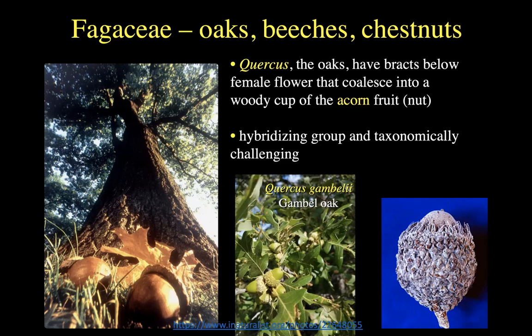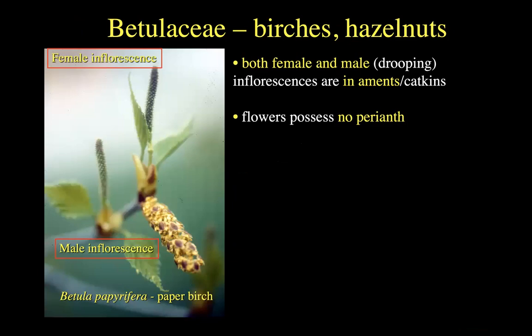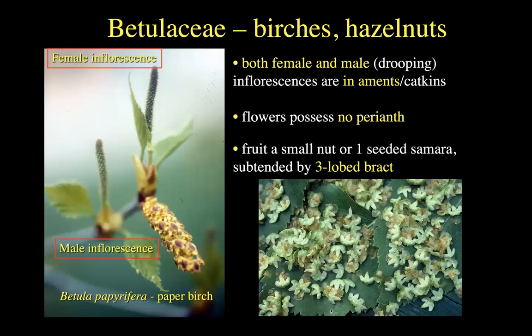Finally, we have the Betulaceae, the birch and hazelnut family. Similarly, we're going to have separate male and female flowers, though on the same individual — so monoecious, as in the paper birch seen here. When you have clusters of single-sexed flowers that are highly reduced, that's called an ament or a catkin. No showy perianth whatsoever in this group. The fruit is going to be called a samara — an indehiscent fruit with a papery wing to mediate wind dispersal — and they often have this very characteristic three-lobed bract, as we see from hazelnuts here.